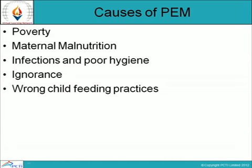Both forms of PEM occur as a result of ignorance of the mother, in addition to poverty. Due to ignorance, the mother may delay the introduction of supplementary food even up to the age of one year.